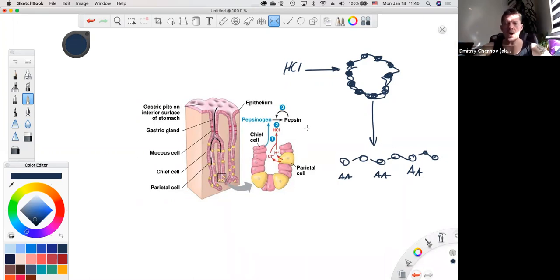Hydrochloric acid is being produced by parietal cells and denatures protein. Now these amino acids are here but they still need to go through another step of digestion. They need to be separated, or this protein needs to be broken down from more complex form into more simple form.